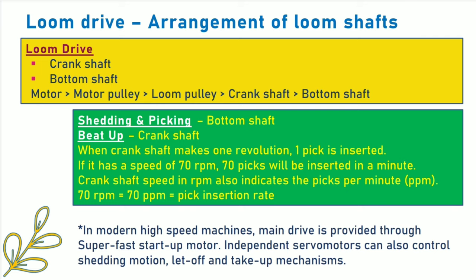From this discussion, it is clear that two shafts are very important in loom drive: the crankshaft and the bottom shaft. Drive transfers from the motor to the motor pulley, then to the loom pulley, then to the crankshaft, and finally to the bottom shaft. With the help of the bottom shaft, shedding and picking operations are performed. From the crankshaft, beat-up operation is performed. When the crankshaft makes one revolution, one pick is inserted. If it has a speed of 70 rpm, 70 picks will be inserted per minute. Crankshaft speed in rpm also indicates picks per minute — 70 rpm equals 70 ppm — and that is called the pick insertion rate.